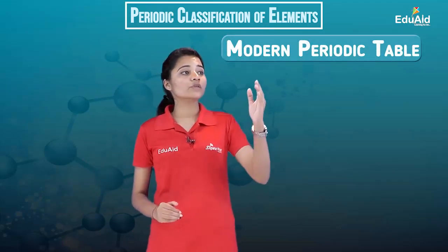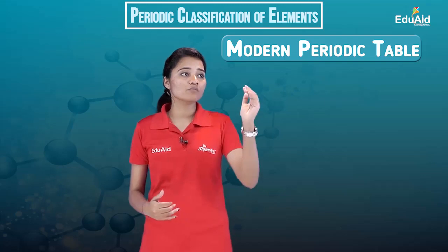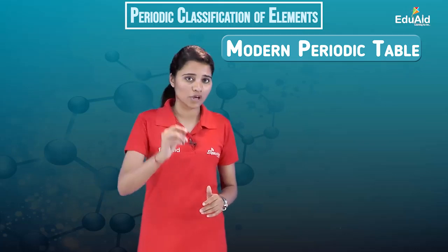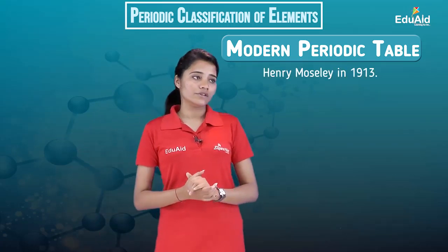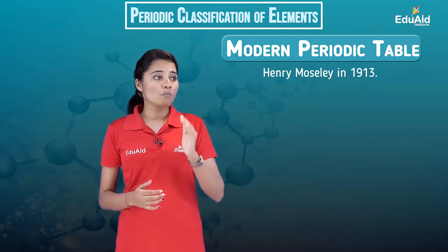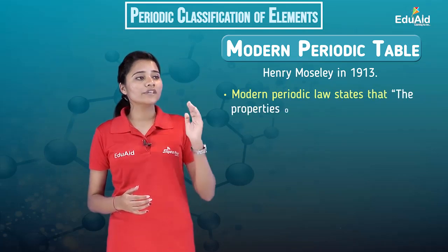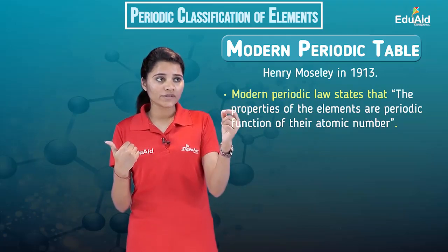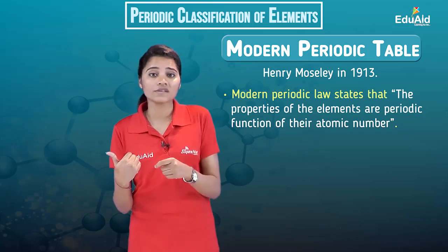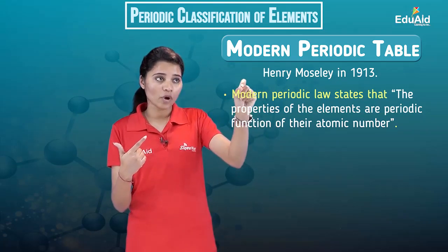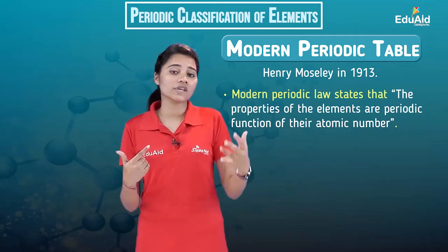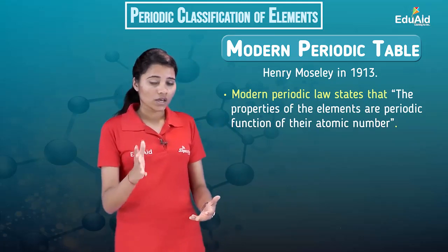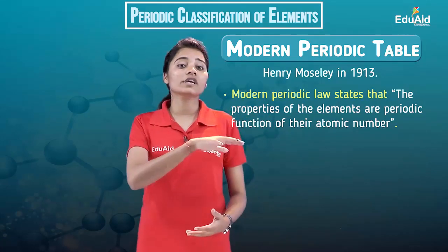Then came the modern periodic table — the periodic table we currently use. It was the result of the change in the periodic law from atomic mass to atomic number by Henry Moseley in the year 1913. This new law is known as the modern periodic law, and it states that the properties of elements are periodic functions of their atomic numbers. So now, elements are arranged with emphasis on atomic numbers rather than atomic mass.